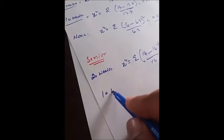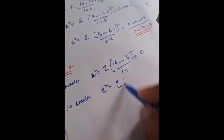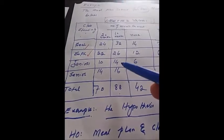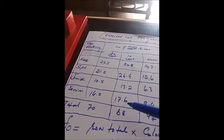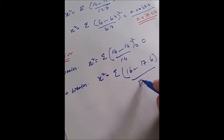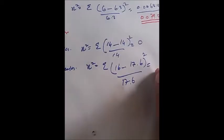For seniors over 10 weeks, chi-square is equal to the summation where the observed value is 16 and the expected value is 17.6. So 16 minus 17.6, whole square, divided by 17.6. The total of this frequency will be 0.1454.